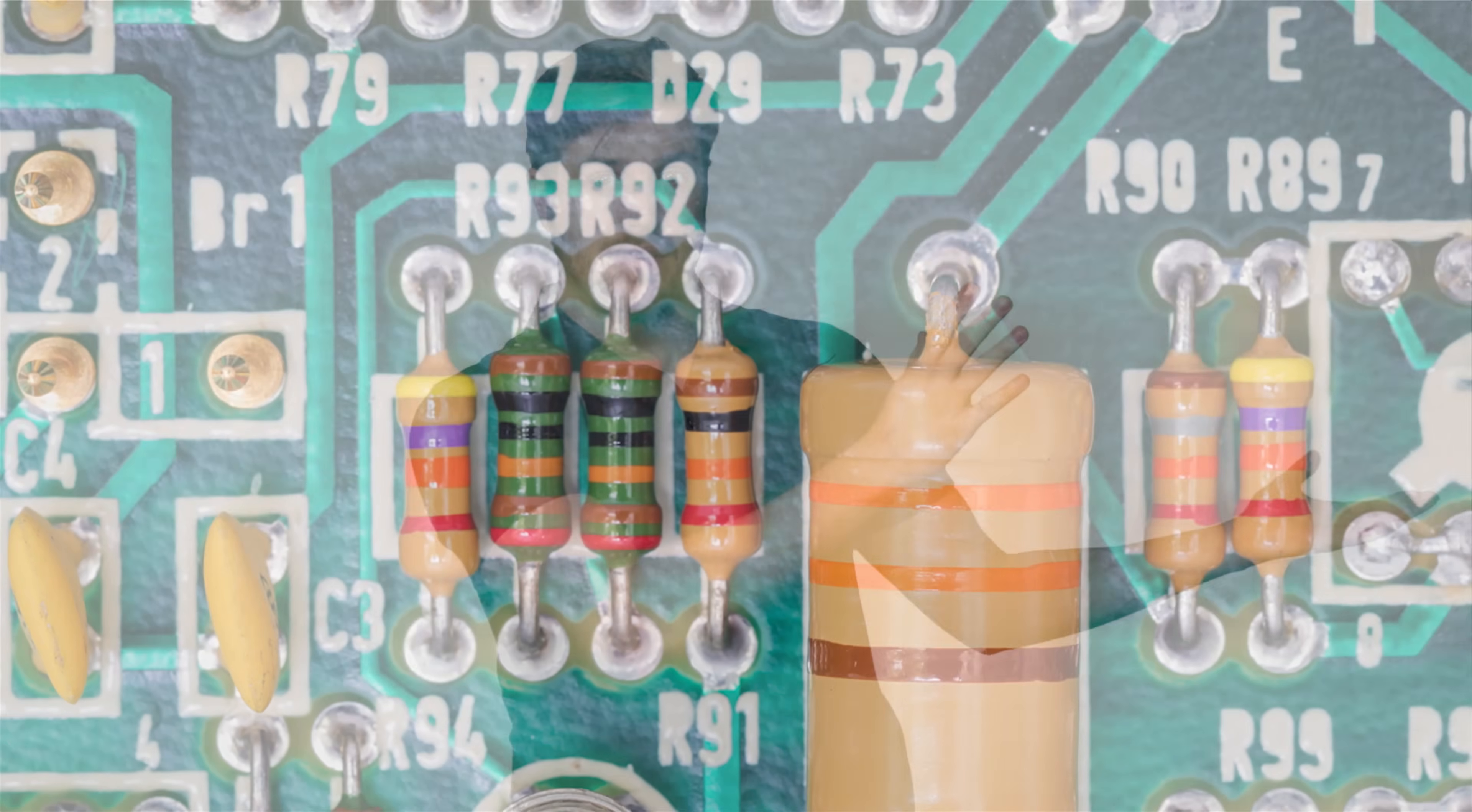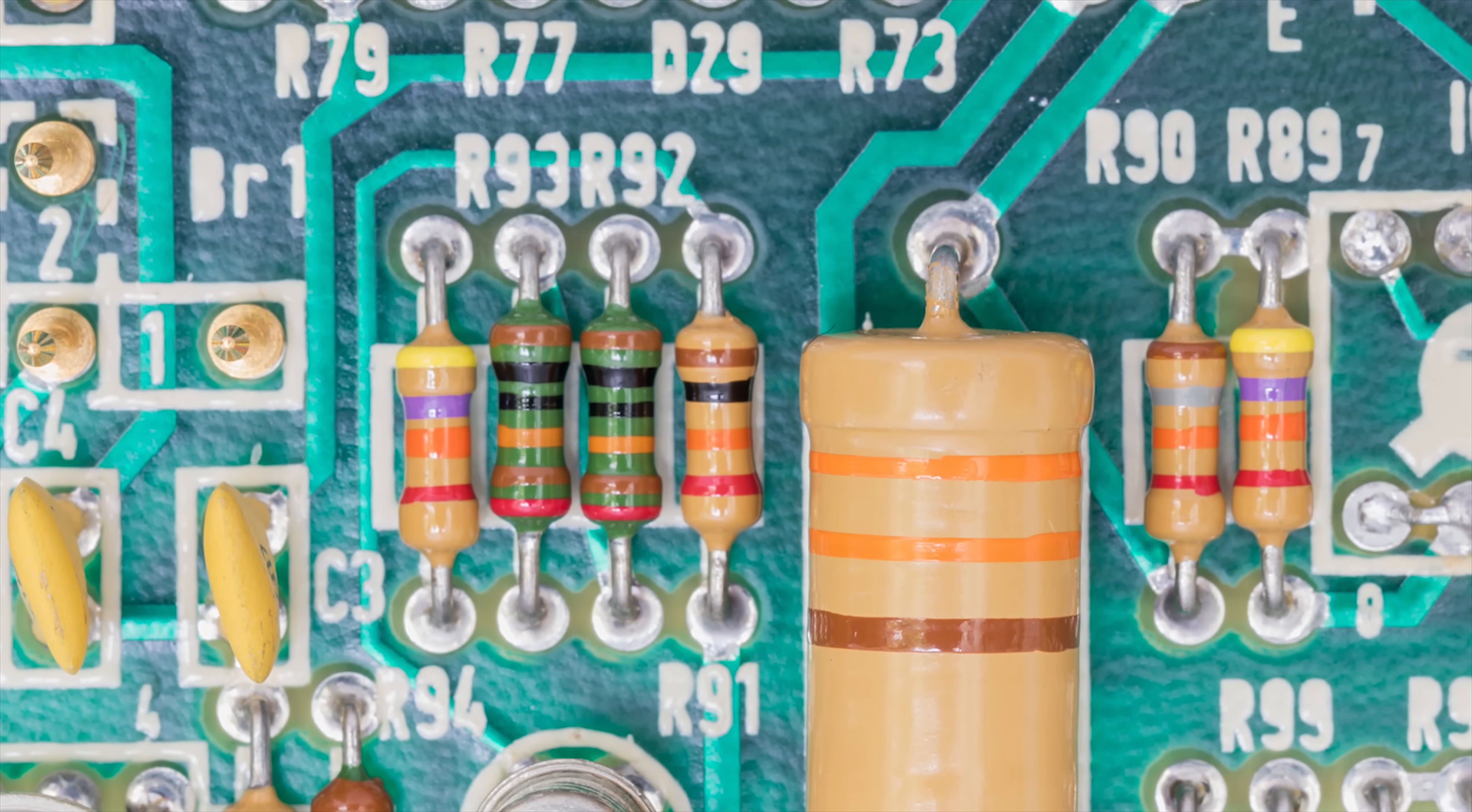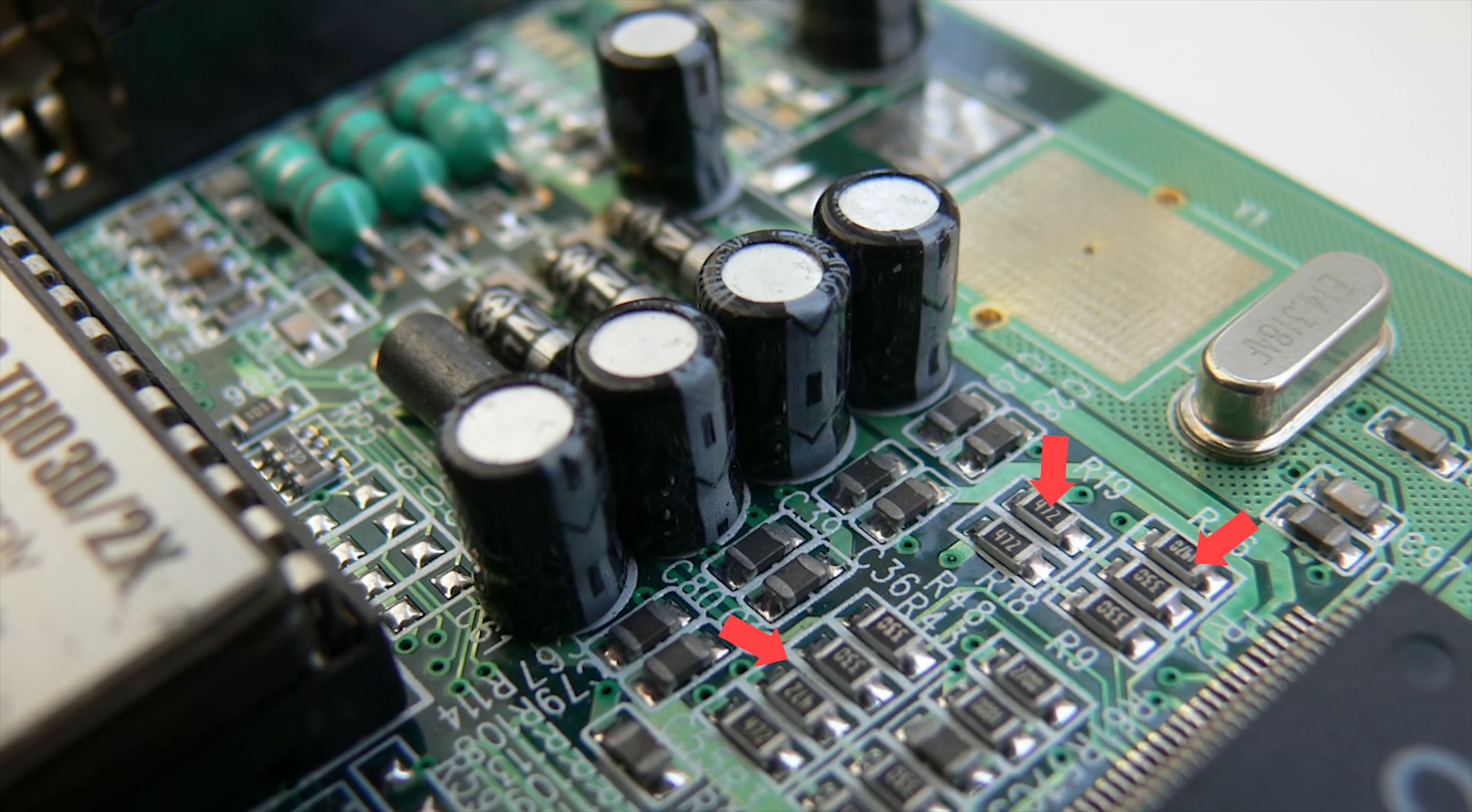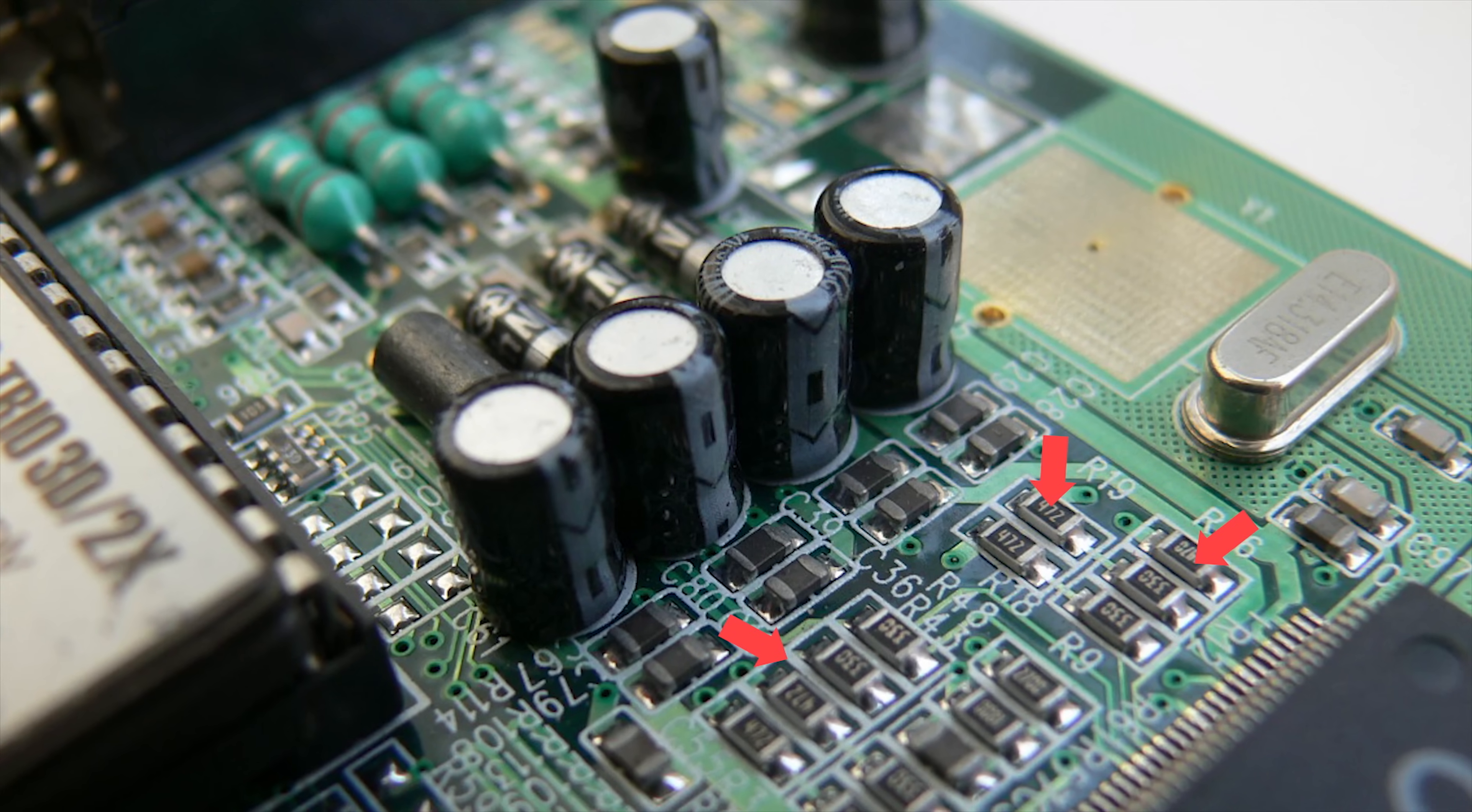Although many hobbyists who have worked with simple circuits might be familiar with resistors that look like this, with colored bands that indicate strength measured in ohms, most resistors on modern motherboards are more understated in appearance, looking like little black and silver rectangles.